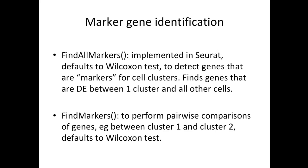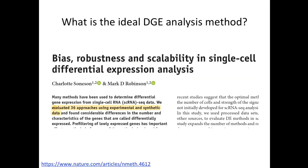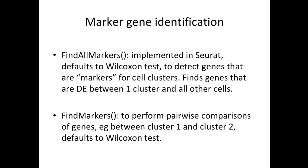There is another function called FindMarkers, which performs pairwise comparison of genes. Instead of taking one cluster against all others, it compares one cluster specifically against another — it's a pairwise comparison, for example between cluster one and cluster two. The default also uses the Wilcoxon test, and other methods are available in the help. You could also compare one cluster versus several others, but each would require separate pairwise comparisons.